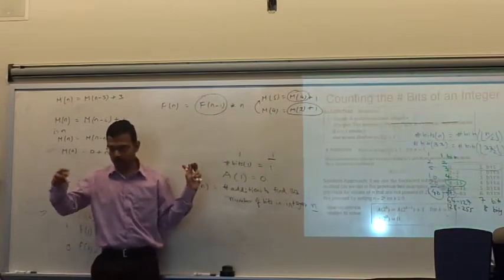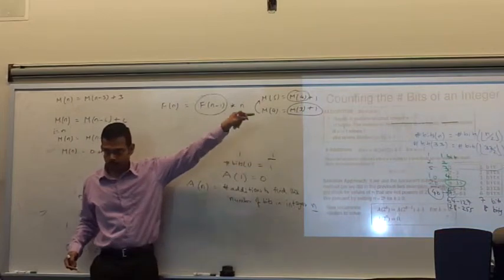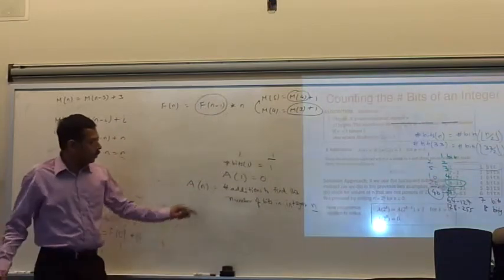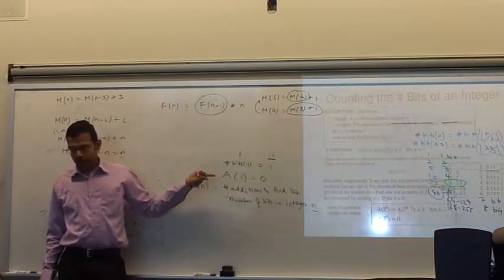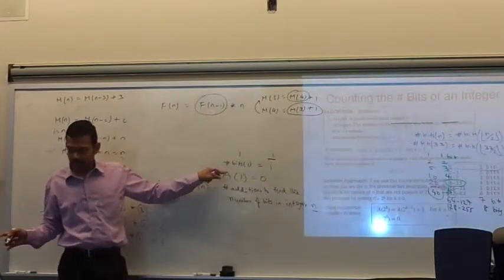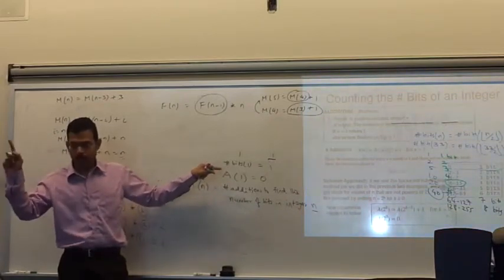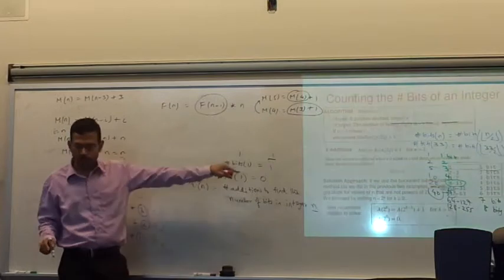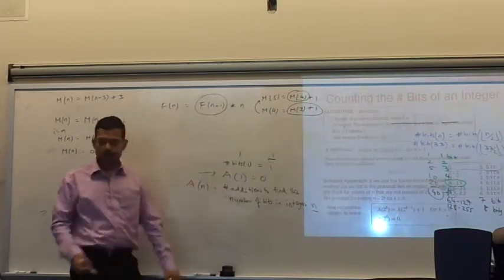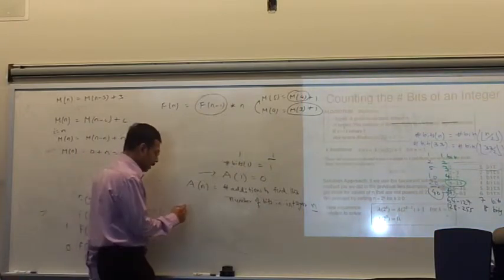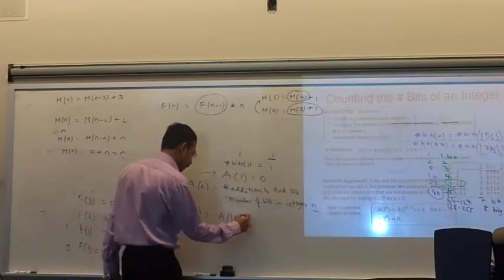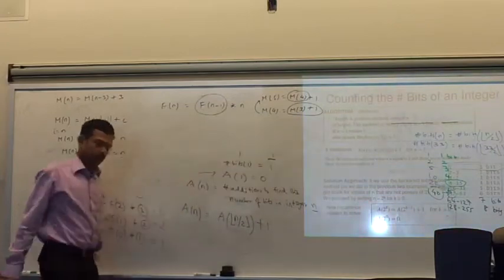So A(n) means: the algorithm finds the number of bits for integer n, and by going through the algorithm, how many additions we need — that's what A(n) means. Basically you are counting the number of additions you do when you execute the algorithm for integer n. For finding the number of bits in integer 1, we don't need any addition because it's well defined — it's the base condition. The number of bits you have to find for integer 1 is 1, so you don't need any addition or division — it's zero.